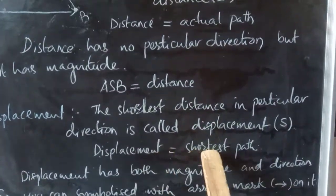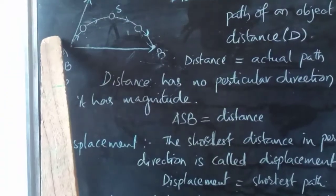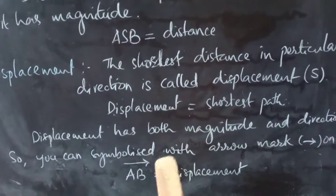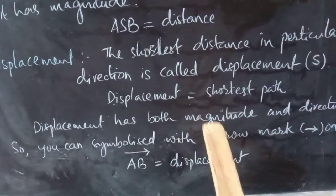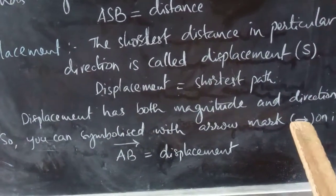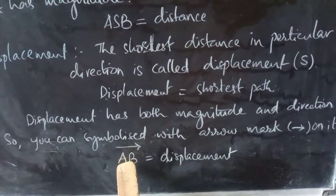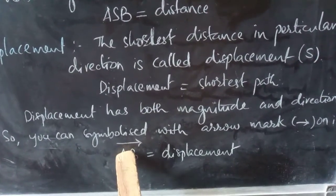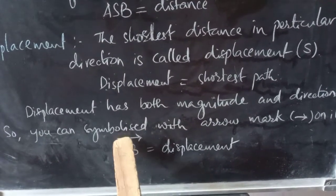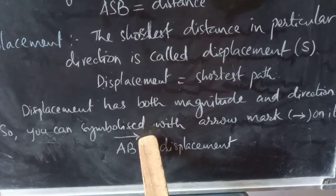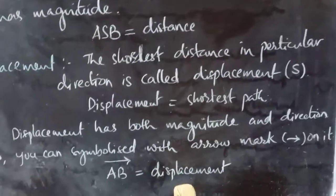Displacement is equal to the shortest path in a particular direction. So A to B — that is a displacement. Displacement has both magnitude and direction, so we show it with an arrow mark. The arrow mark shows the particular direction, and the length A to B is the magnitude. So A to B with an arrow mark is what we call displacement.